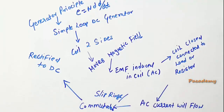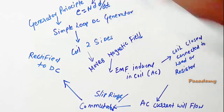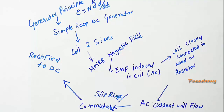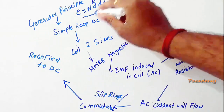This video is about the working of a simple loop DC generator. According to the generator principle, an EMF is induced according to the equation E = N dΦ/dt. So whenever there is a conductor which moves, or there is a flux linkage happening in the conductor which moves in the magnetic field, an EMF will be induced according to that equation.